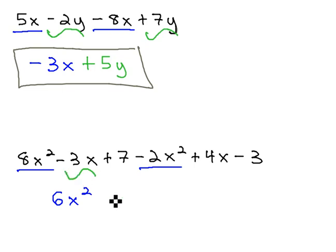The negative 3x, also looking for a like term, would be like the positive 4x. Negative 3 plus 4 is positive 1x. With variables, we never need to write the number 1 in front of a variable, because we will always assume there's a 1 there.